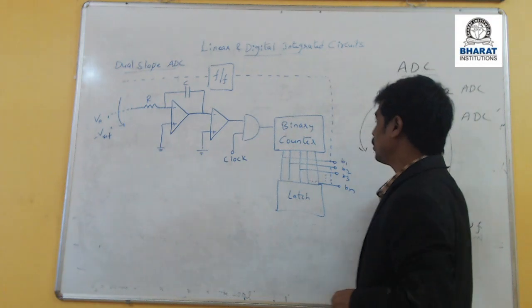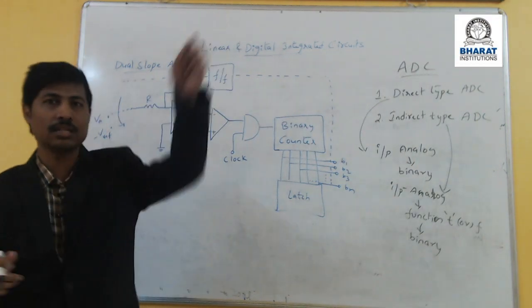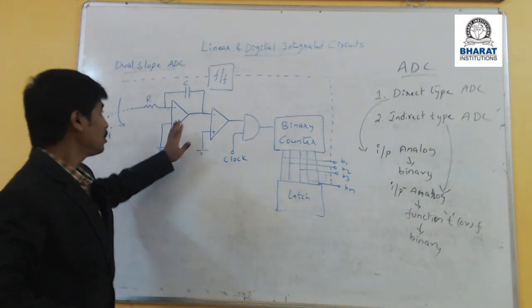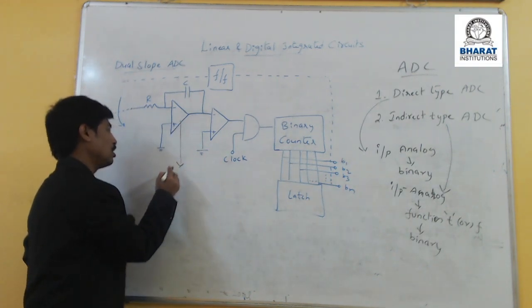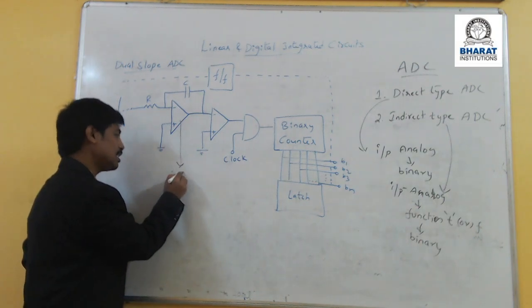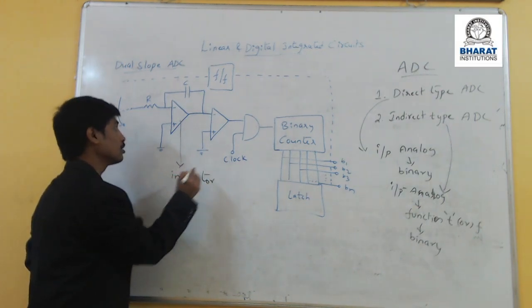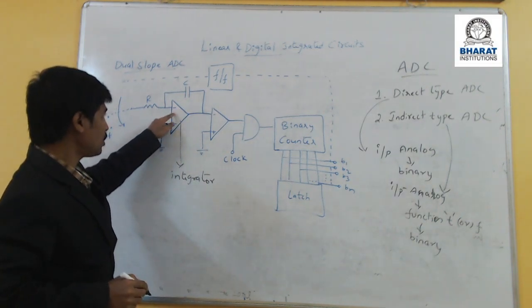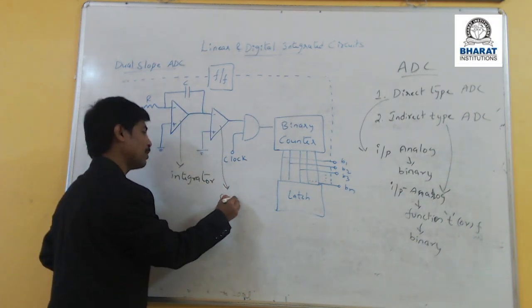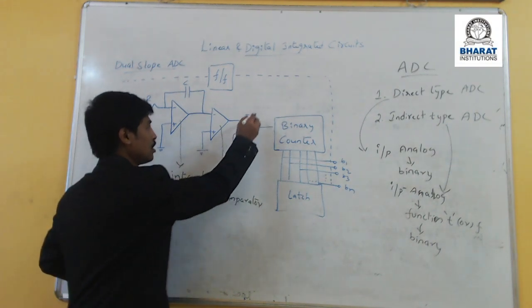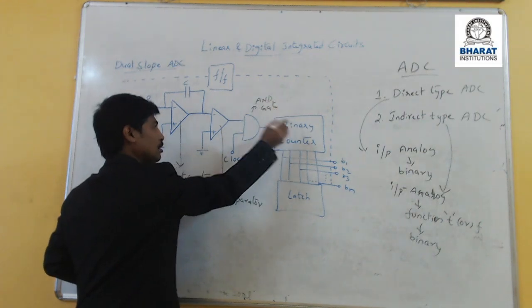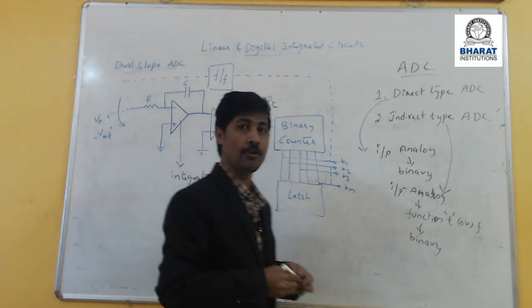In indirect type, we are going to have the method called dual slope ADC. That is the topic I am going to cover. In dual slope ADC, the main blocks are: first, an R and C combination — R and C means it is an integrator. After this, the operational amplifier working as integrator and the operational amplifier functioning as comparator. And another familiar block is an AND gate, and another block is the binary counter. These are the main blocks of the ADC.